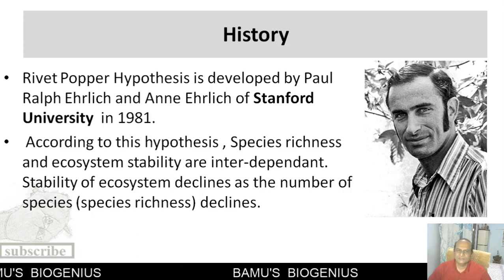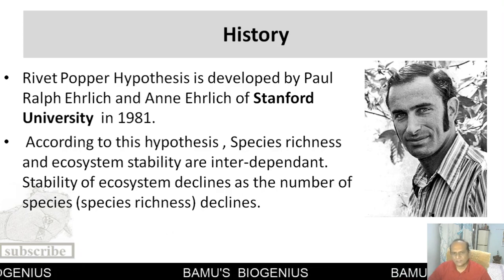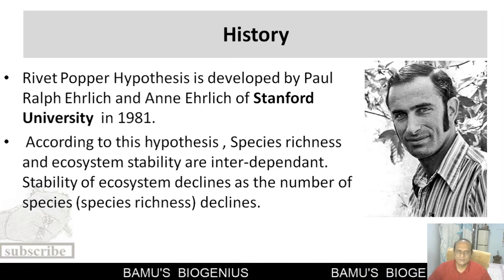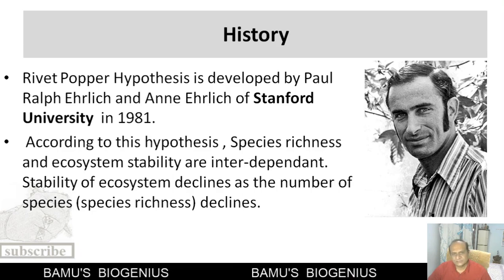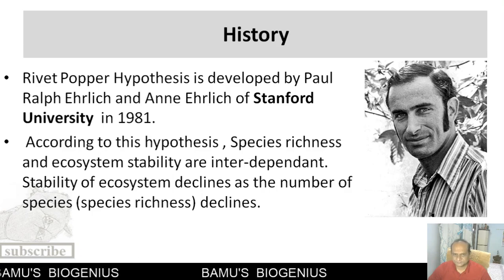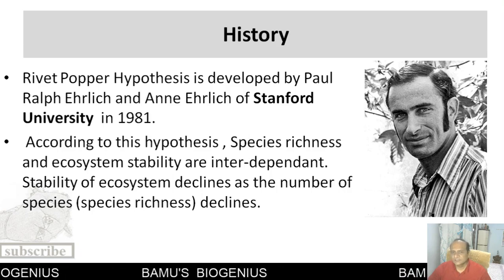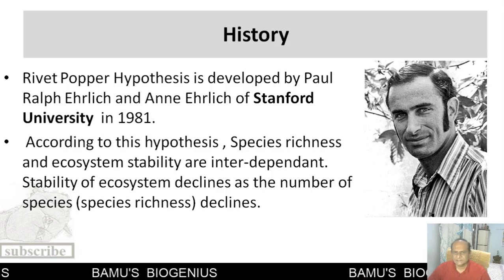First, what do we mean by hypothesis? A hypothesis means a kind of crude explanation for a particular problem. According to this hypothesis, species richness and ecosystem stability are interrelated and dependent upon each other. As species richness declines, the stability of the ecosystem also declines. Species richness means the number of species that occur in a particular ecosystem.